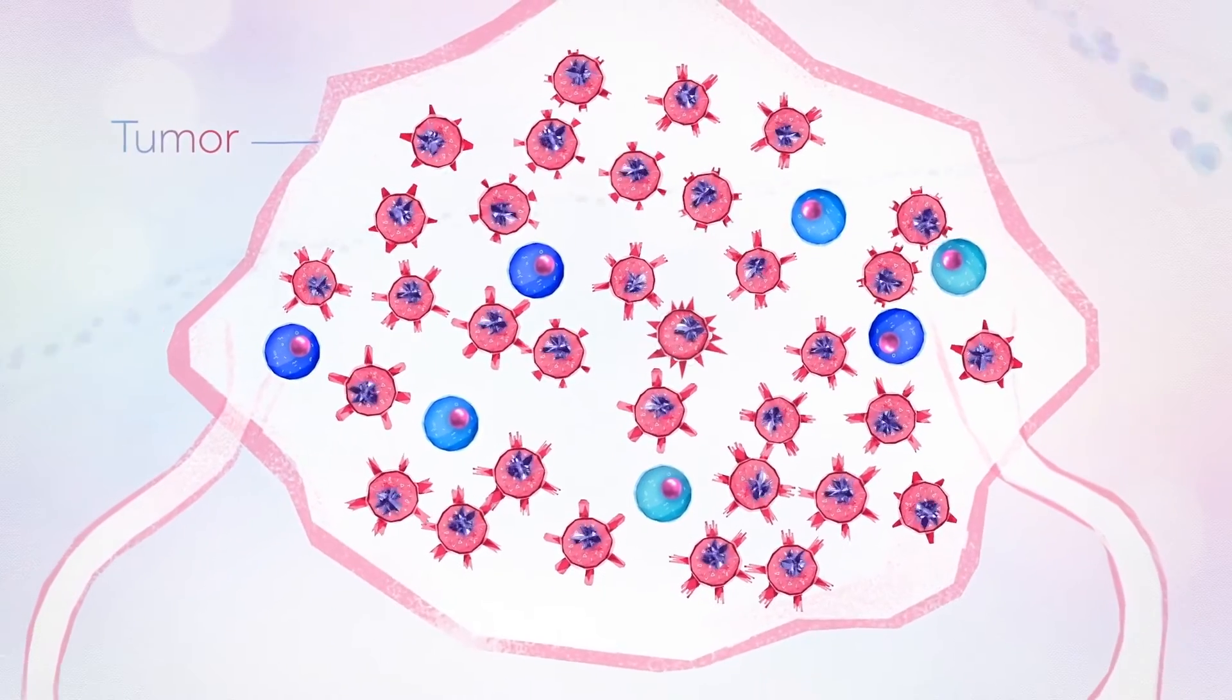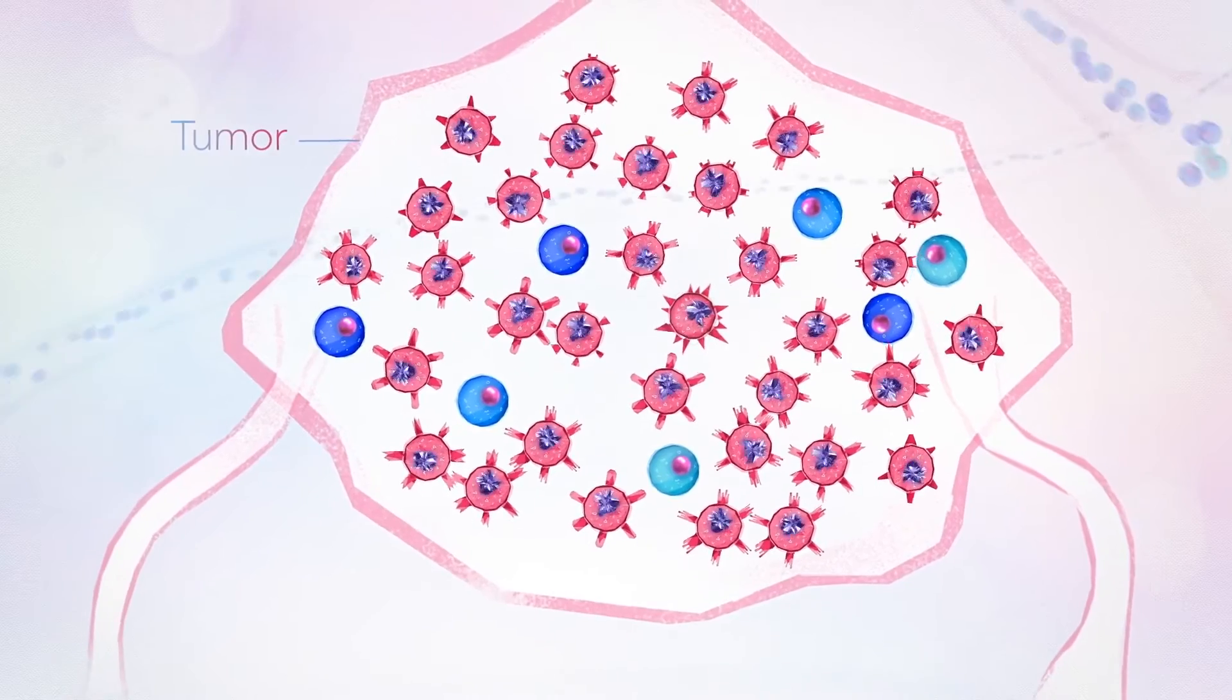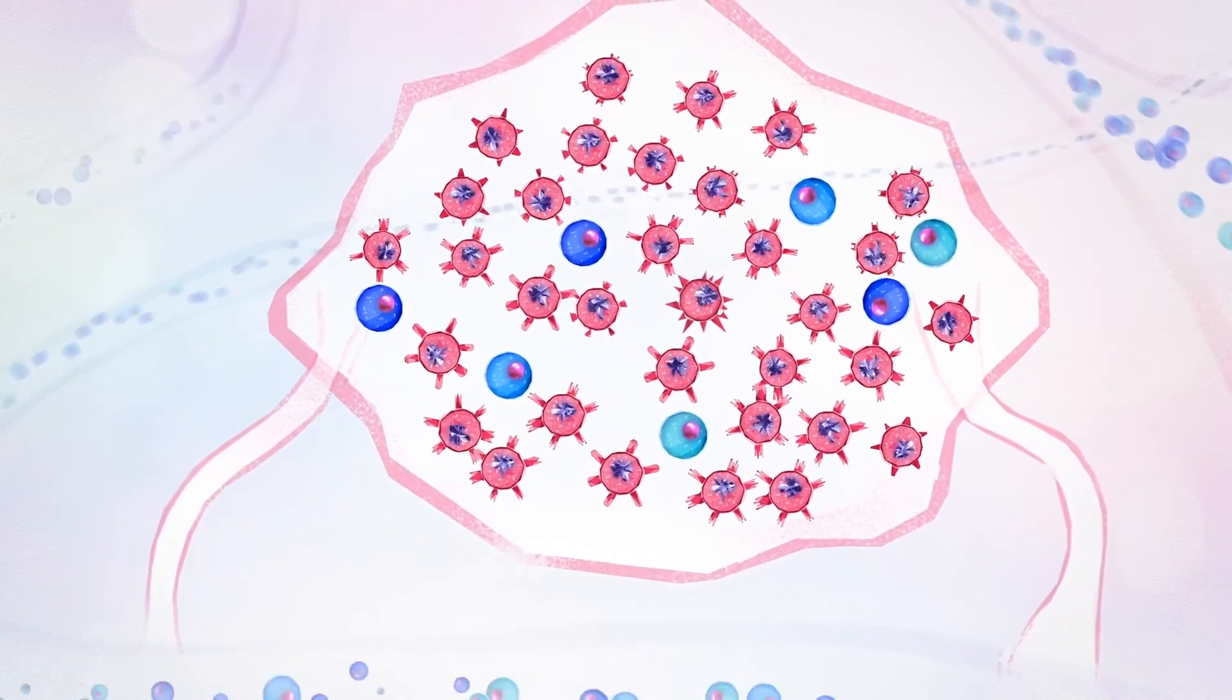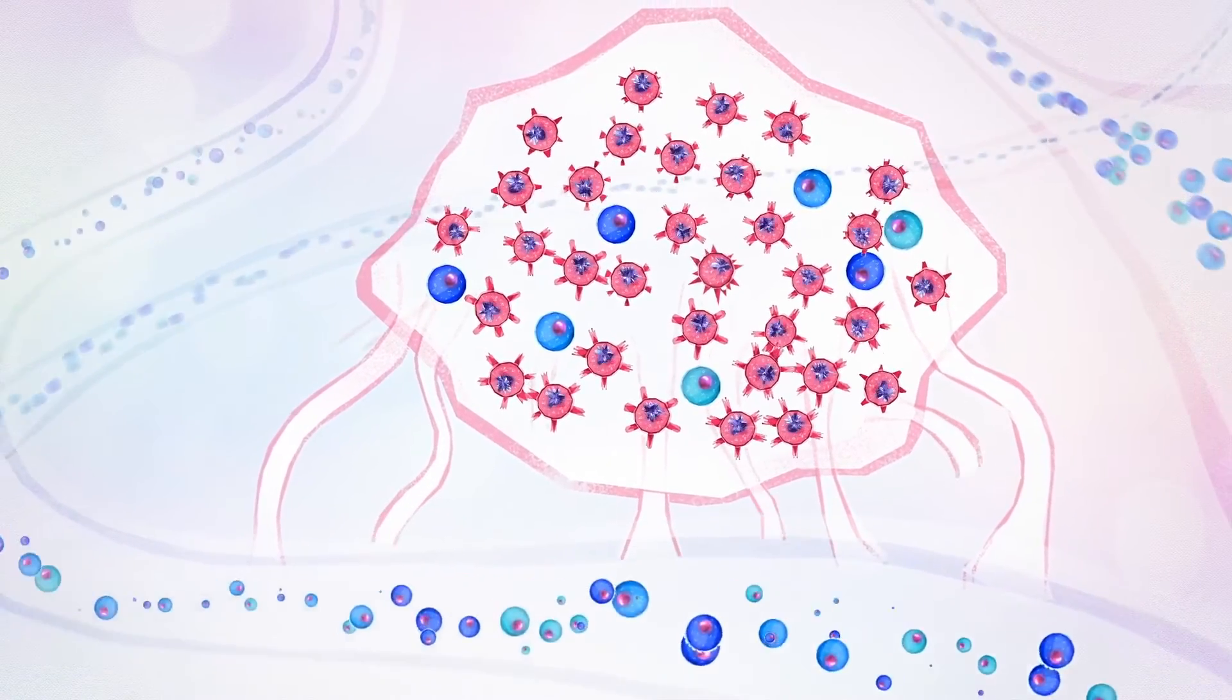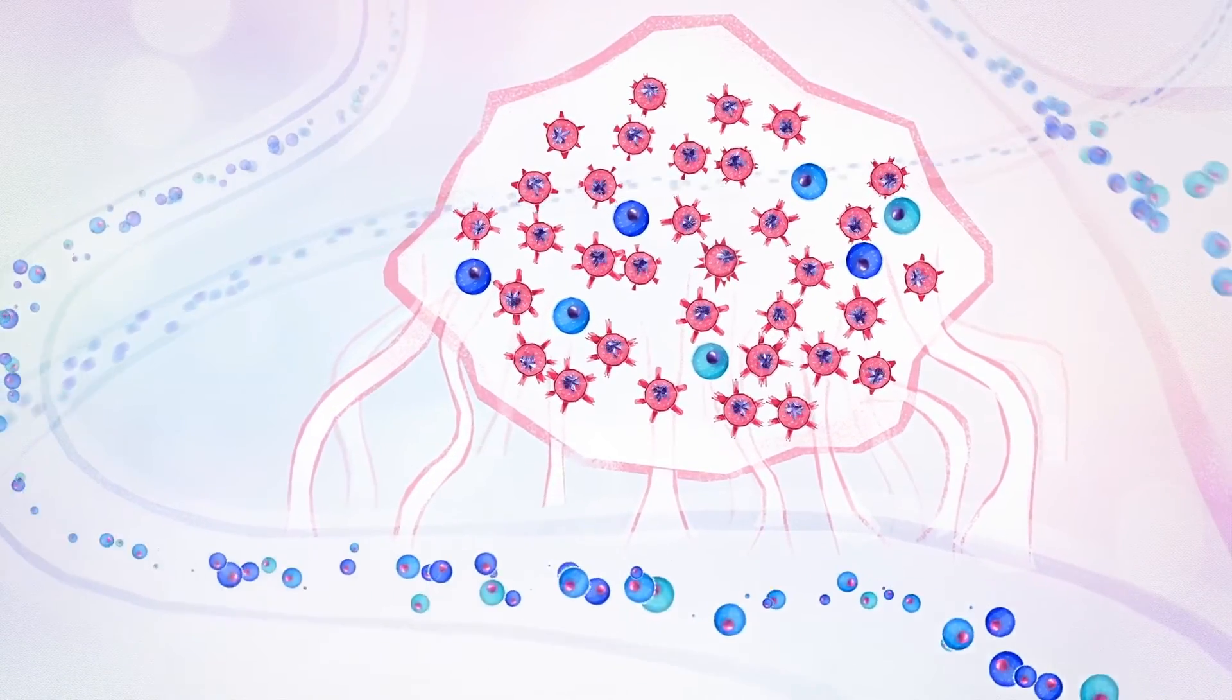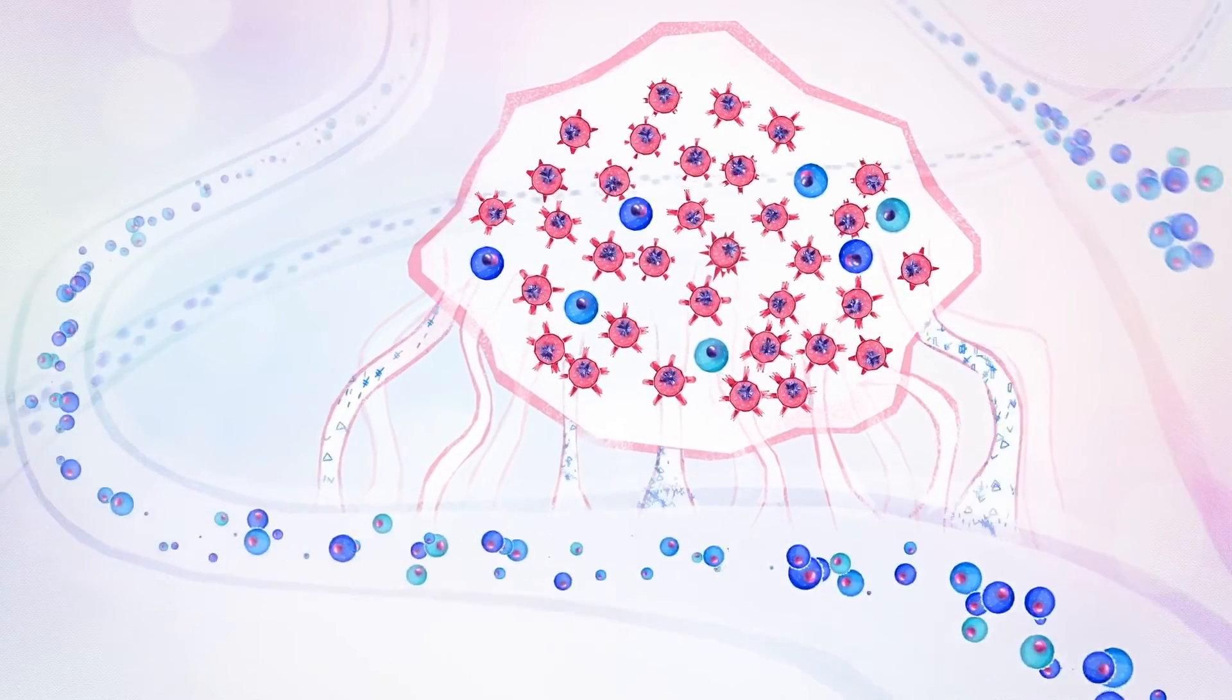Cancer cells will then proliferate to form a tumor composed not only of transformed cells, but also of normal cells that protect and collaborate with cancer cells. Progressively, cancer cells also induce the formation of new blood vessels that will irrigate the tumor to provide oxygen and nutrients.